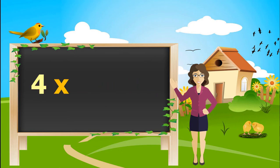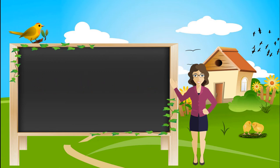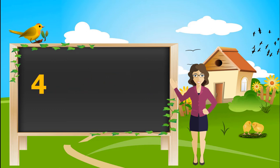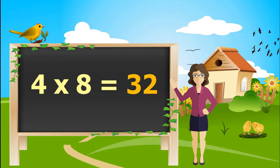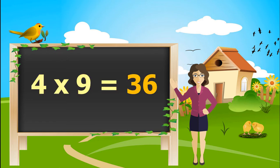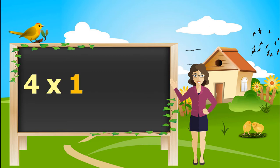4 sixes are 24. 4 sevens are 28. 4 eights are 32. 4 nines are 36. 4 tens are 40.